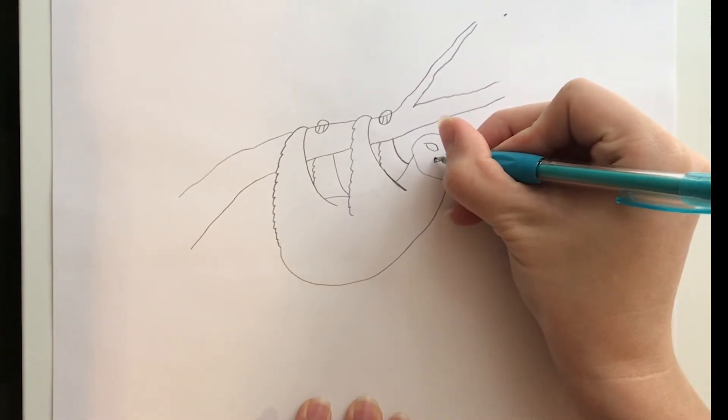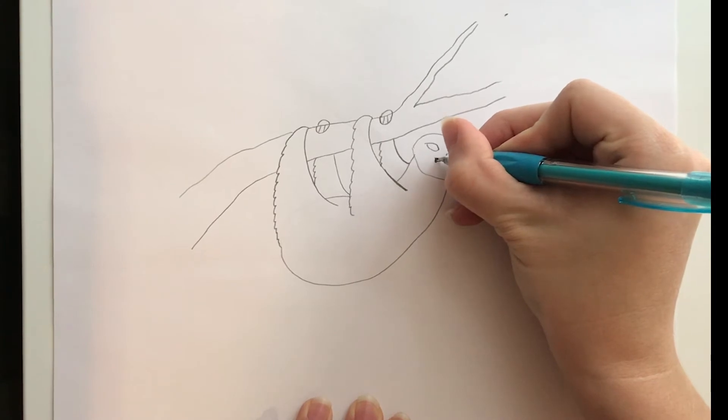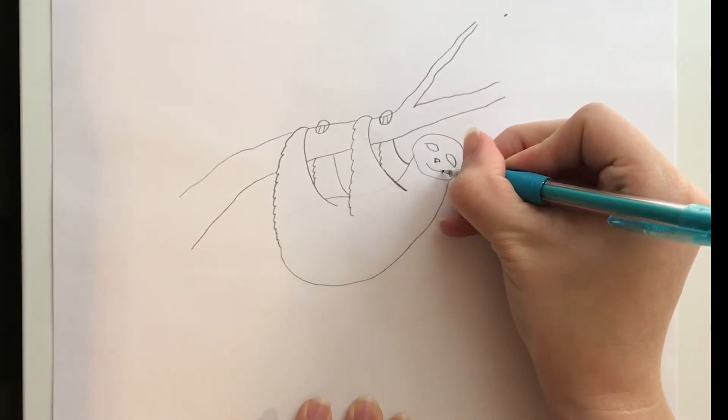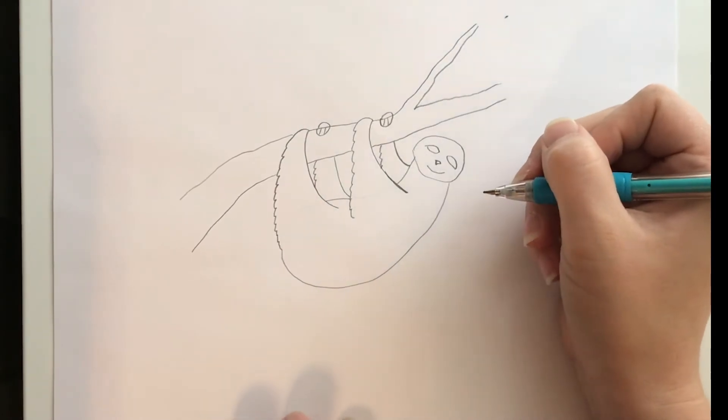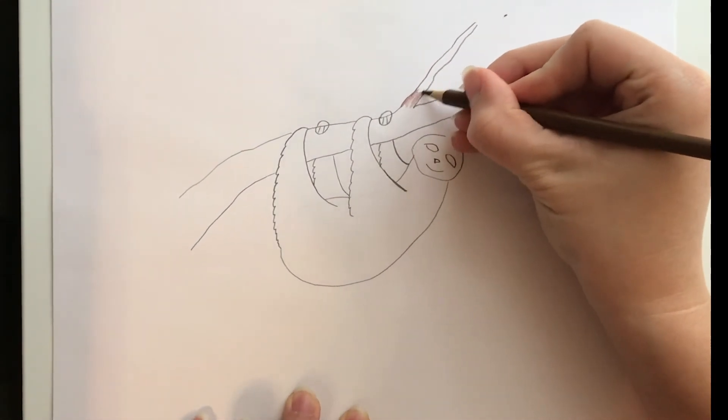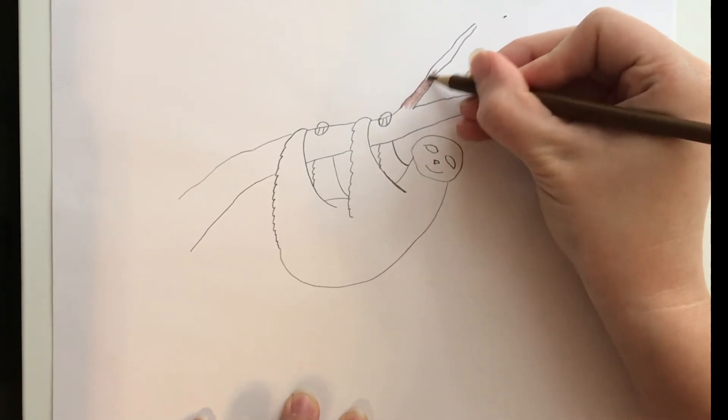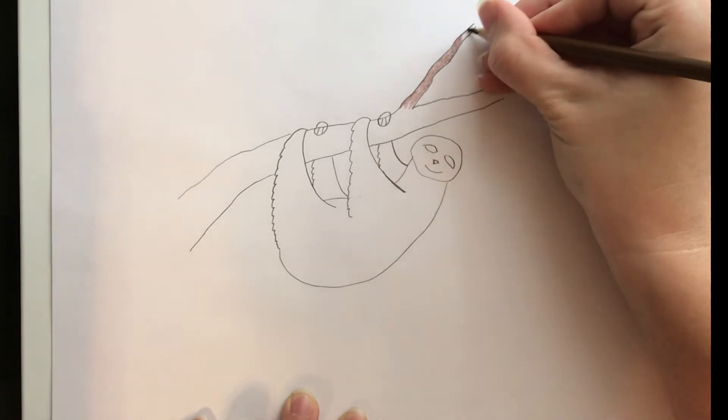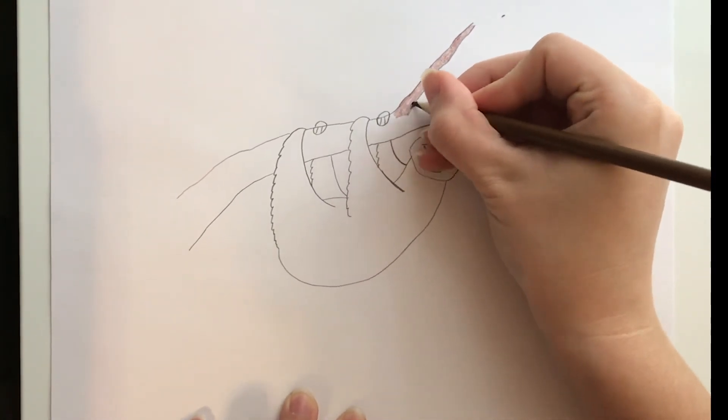I'm going to give my sloth a little triangle nose then I'll fill in when I start coloring and I think it's a happy sloth so a little smile. All that's left to do is begin coloring. I'm going to color my tree branch a dark brown then I'll move on to a lighter brown for my sloth, a tan for the sloth's face and fill in his features with black.